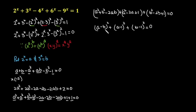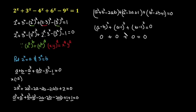Now I can see the sum of three terms is equal to 0. This is only possible when each individual term is equal to 0, because they are all squares — meaning they are all non-negative (positive) terms. So I will discuss all three cases one by one.